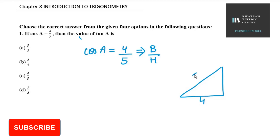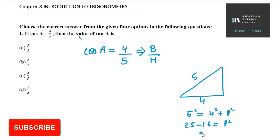Base is 4 and hypotenuse is 5. We can find the perpendicular using: hypotenuse squared equals base squared plus perpendicular squared. So 25 equals 16 plus P squared, giving P squared equals 9, and the square root of 9 is 3. So perpendicular is 3.